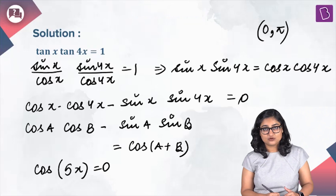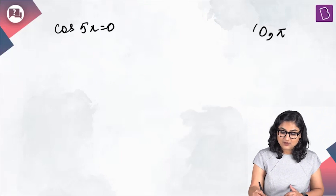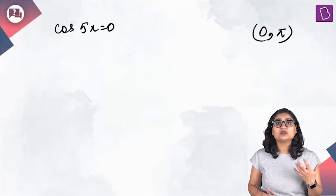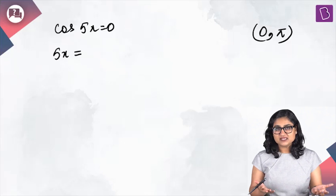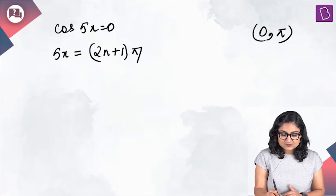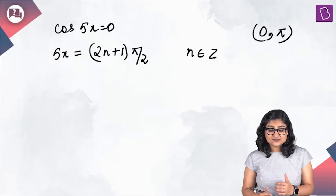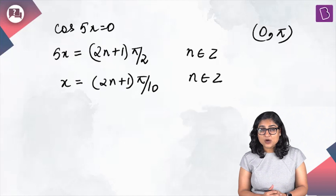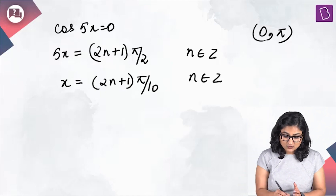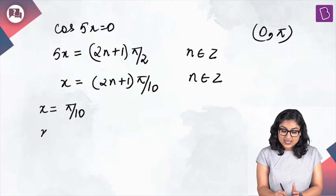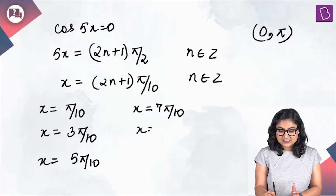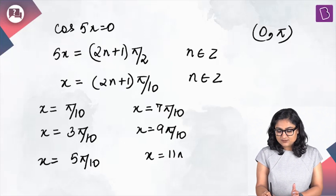We now solve cos(5x) = 0 for x in (0, π). Cosine is zero at odd multiples of π/2, so 5x = (2n+1)·π/2, giving x = (2n+1)·π/10. The solutions in order are: π/10, 3π/10, 5π/10, 7π/10, 9π/10, 11π/10, and so on.